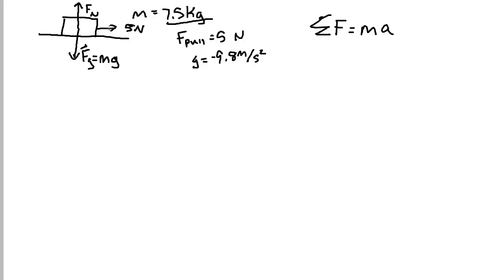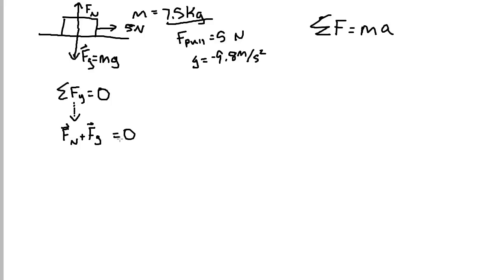If I'm pulling the block horizontally, the block isn't going to move up or down. So the sum of my forces in the y direction equals 0, because there is no acceleration. That means my normal force plus my force due to gravity both added together have to equal 0. If we found the object's weight — 7.5 times negative 9.8 — that gives me negative 73.5 Newtons.